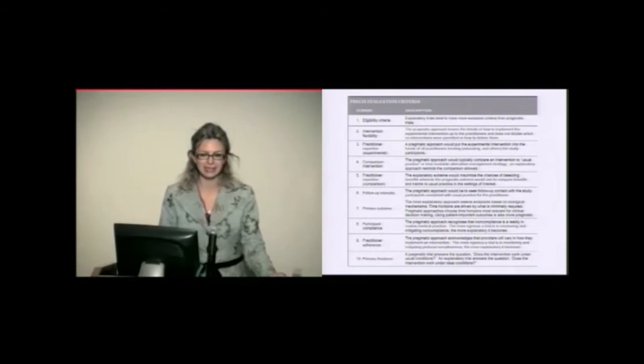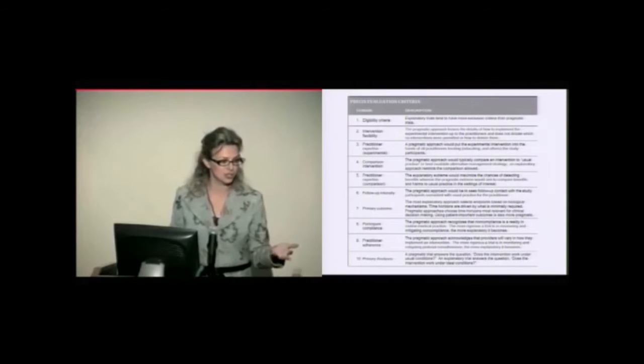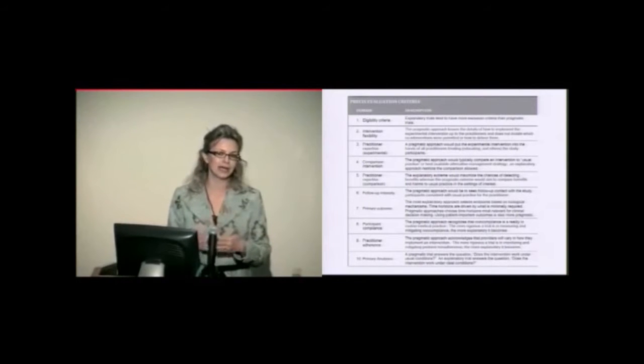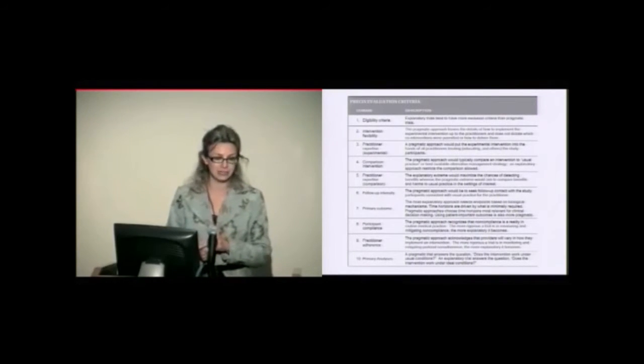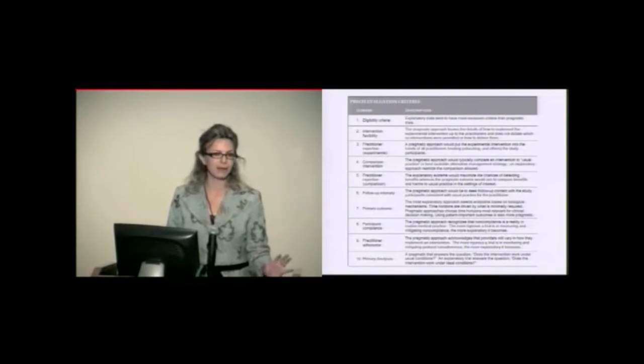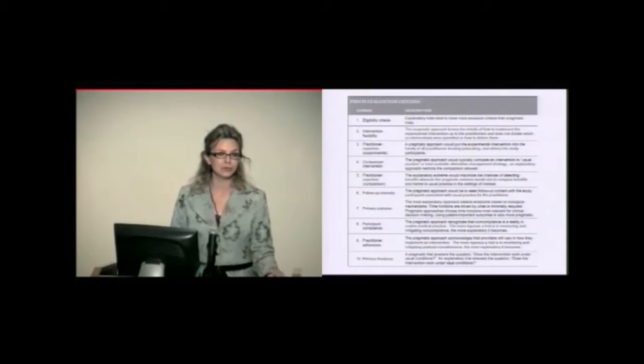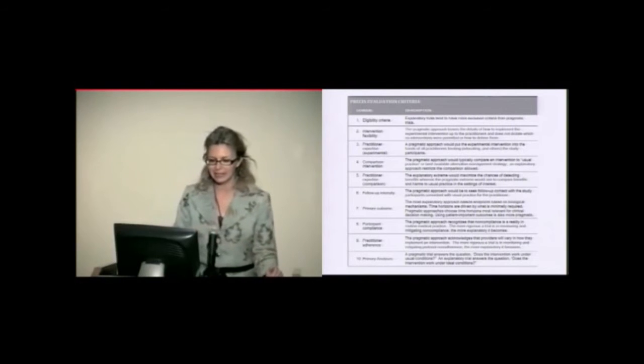A study that is very pragmatic would want to include people from a wide variety of settings, and with almost any kind of condition. With an explanatory approach, they are starting to exclude individuals based on potentially if they don't have high chances of responding to a treatment, or they don't have high risk of developing a certain outcome. With that, obviously, our conclusions that can be made are going to be less generalizable. Similarly to that, a more pragmatic trial will allow for some flexibility in terms of how the intervention is implemented. The more explanatory will want to train the implementers very well, and rigorously control what's actually happening. And that's true for the other components. I don't want to spend too much time here.